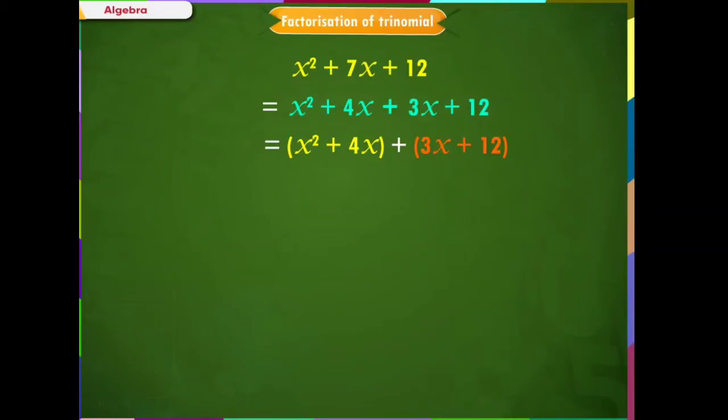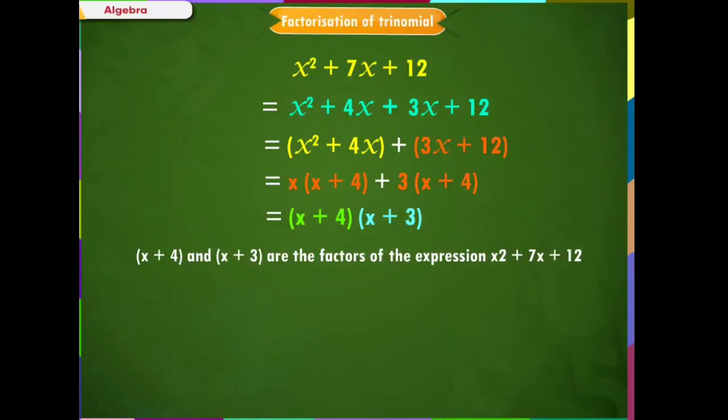Next, we take common factors out in both these terms: x(x + 4) + 3(x + 4) = (x + 4)(x + 3). So, (x + 4) and (x + 3) are the factors of the expression x² + 7x + 12.